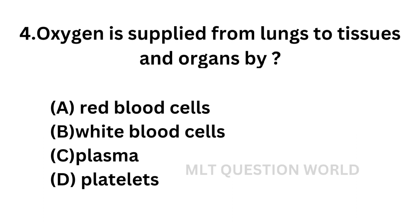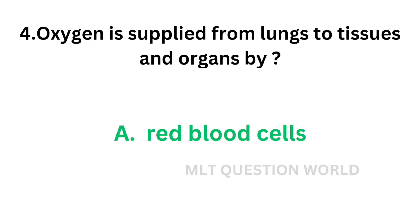Question number 4: Oxygen is supplied from lungs to tissues and organs by. Option A: Red blood cells. Option B: White blood cells. Option C: Plasma. Option D: Platelets. Hemoglobin molecules in the red cells can carry oxygen. Red cells squeeze through capillaries and take oxygen from lungs to tissues and organs. The correct answer is option A: Red blood cells.